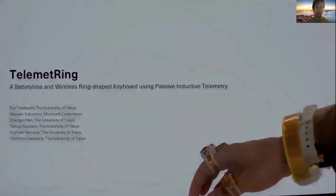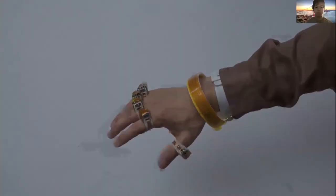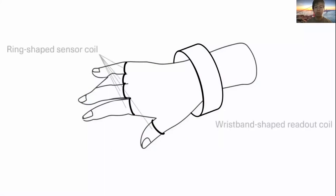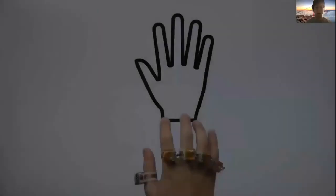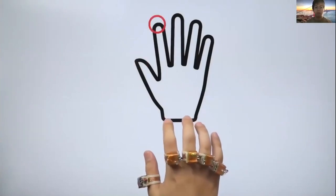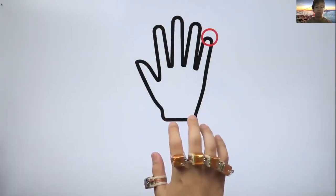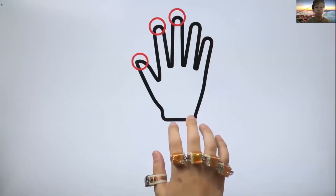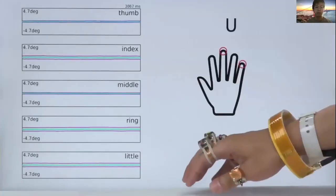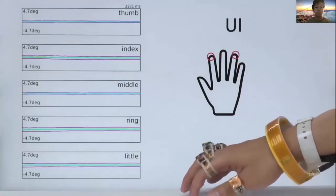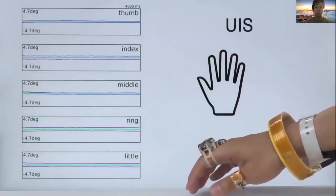TelemetRing consists of five battery-less ring-shaped sensor coils and a wristband-shaped reader coil. Because the rings and the wristband are coupled inductively, the wristband can receive the sensor information wirelessly. So, TelemetRing can detect which finger types like this. Also, by decoding the typing sequences to the characters, we can type text like this.